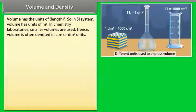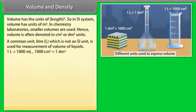Volume has the units of length raised to the power 3. So, in SI system, volume has units of meter cube. In chemistry laboratories, smaller volumes are used. Hence, volume is often denoted in centimeter cube or decimeter cube units. A common unit, liter (L), which is not an SI unit, is used for measurement of volume of liquids. One liter is equal to 1000 milliliter. 1000 centimeter cube is equal to 1 decimeter cube.